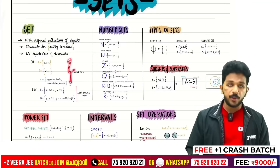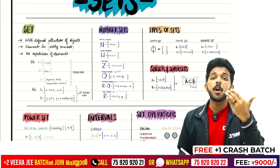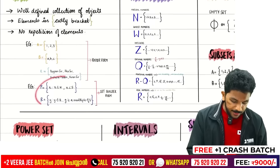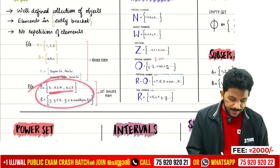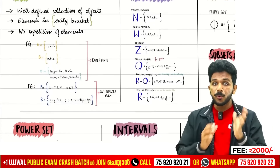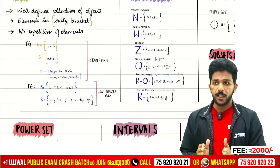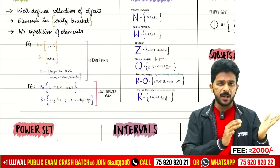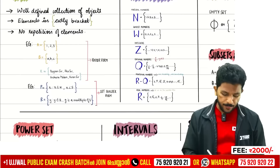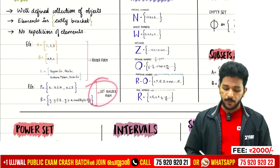The types of set representation: roster form is one method. Set builder form uses instruction and rule — for example, elements less than 6. That is set builder form.